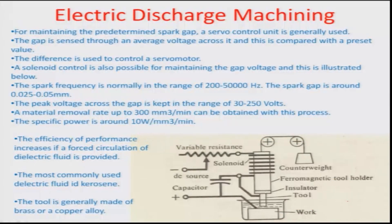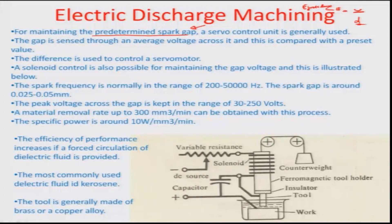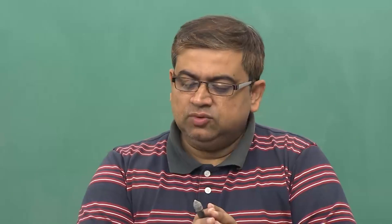In order to maintain the predetermined spark gap, the voltage V divided by distance D must produce an electric field greater than the breakdown field E_breakdown of the medium. A servo control is generally preferred to maintain that gap. The gap is sensed through the average voltage across it, compared to a preset value, and a servo motor initiates linear feed of the tool with respect to the workpiece so that the voltage changes to the predetermined preset value.